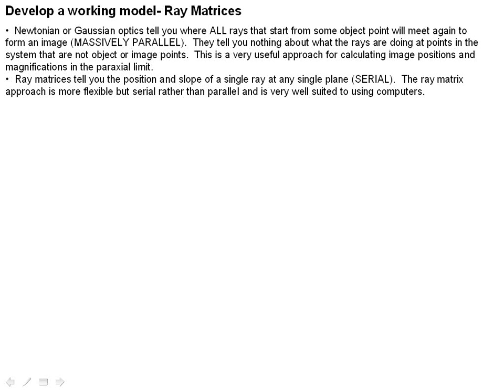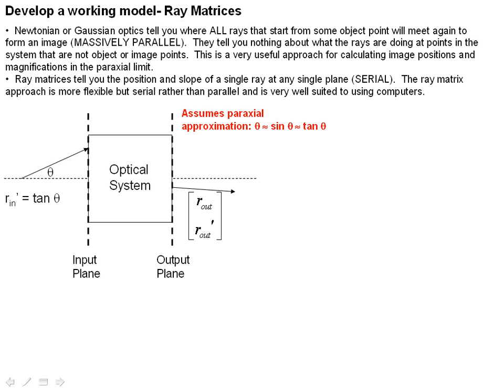Ray matrices tell you the position and slope of a single ray, because you have to specify the starting position, the starting slope, at any single plane. So it's a serial thing. You can calculate a lot of information about a single ray, but you have to do it one ray at a time. It's very flexible, and it's well suited to doing calculations using computers.